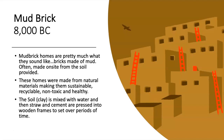Mudbrick houses, 8,000 BC. Mudbrick homes are pretty much what they sound like: bricks made of mud, often made on site from soil provided. Building mud bricks requires a sturdy footing that can withstand weight and provide a relatively flat surface. The brick itself is generally soft, so the use of hand tools would suffice. The construction of these mud brick homes is low cost and low energy, with the ability to store and release a sizable amount of heat. The only downfall is these homes can be easily damaged by rain and wind if not protected. These homes were made from natural materials, making them recyclable, non-toxic, and healthy. The soil is mixed with water and straw and pressed into wooden frames to set over periods of time.